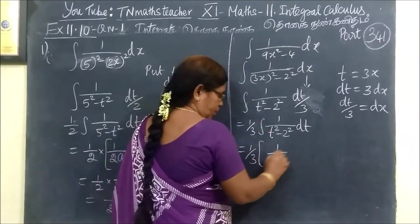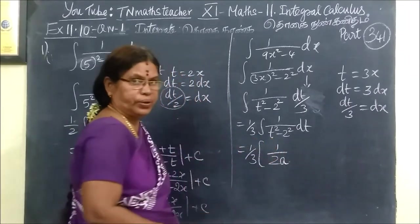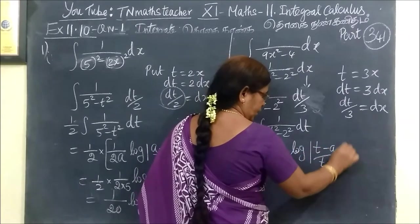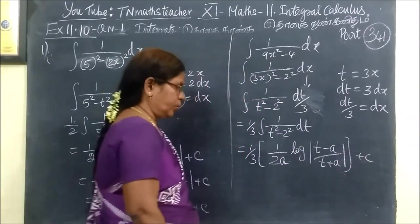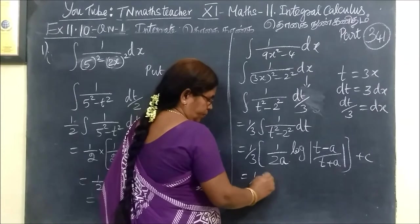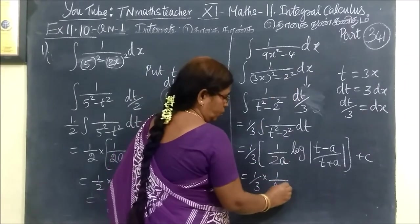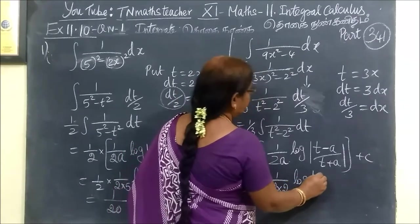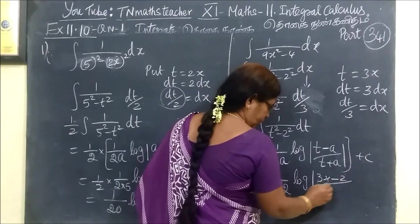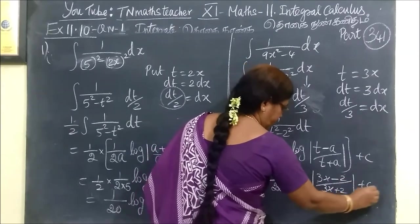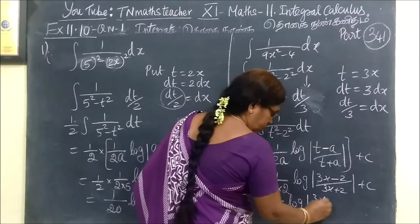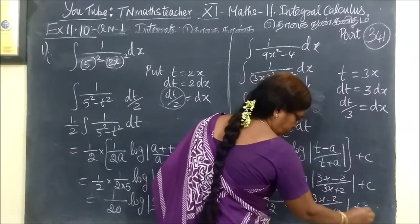Applying the formula 1 by 2a, and since t comes first, we use log of t minus a by t plus a. Here a equals 2. So we have 1 by 3 into 1 by 2 into 2 into log of modulus of t minus a. Replacing t with 3x, so 3x minus 2 by 3x plus 2 plus C. Therefore 1 by 2 into 4 equals 1 by 12, then log of 3x minus 2 by 3x plus 2 plus C.